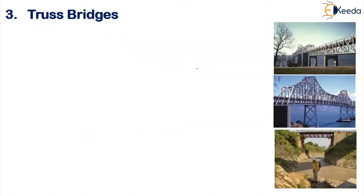Now let us move on to the next type — your truss bridge. The name itself indicates there will be a truss structure formed either to support the formation level or below the formation level. In all these places, trusses will be present to form the bridge structure, and these are placed above your superstructure.